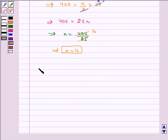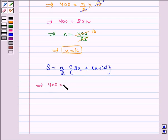Now we have S is equal to N by 2 multiplied by 2A plus N minus 1D. Here we have to find the value of D. Substituting the values, we get 400 is equal to 16 by 2 multiplied by 2 into 5 plus 16 minus 1 multiplied by D.